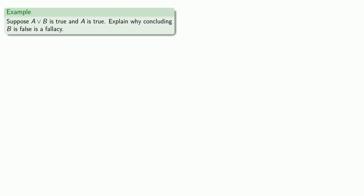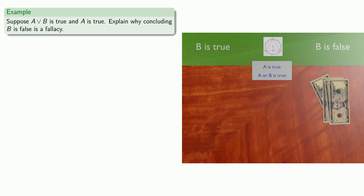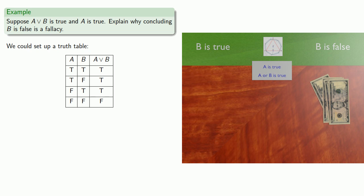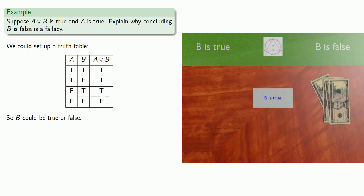The third common logical fallacy emerges as follows. Suppose the disjunction 'A or B' is true and we also know that A is true. Explain why concluding that B is false is a fallacy. Our huckster guarantees that both A is true and 'A or B' is true. Are we willing to put $20 down on the claim that B is false? Setting up our truth table, we see that 'A or B' is true and A is true could be in one of these two lines, so B could be true or false. If we claim it's false, that's a fallacy and we'll lose our $20.